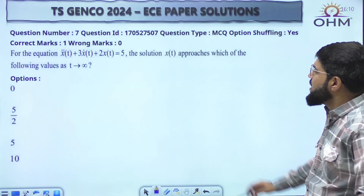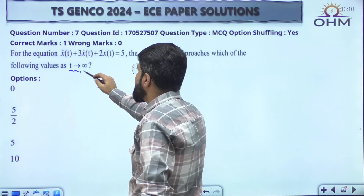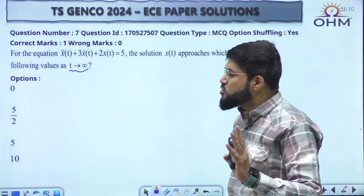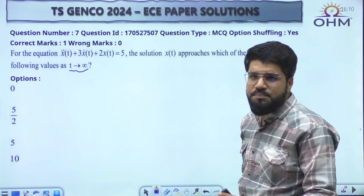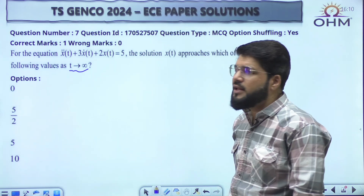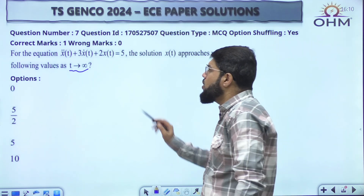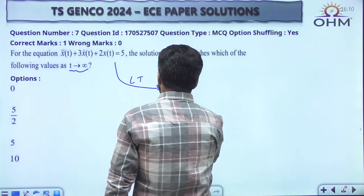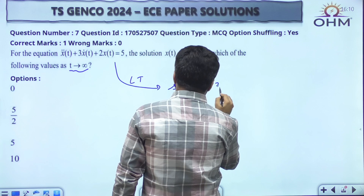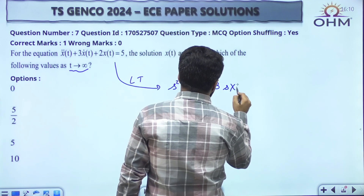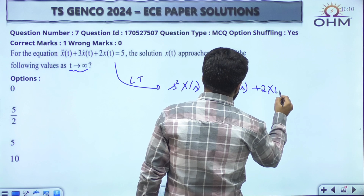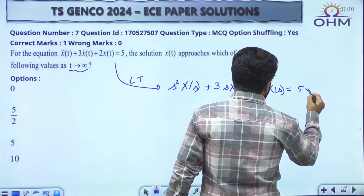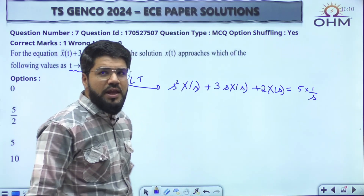Next question: for the equation x''(t) plus 3x'(t) plus 2x(t) equal to 5, the solution approaches which value for t tending to infinity? t tending to infinity means the final value theorem. This can be solved by calculating the complementary function and particular integral, or by the Laplace transform method. The Laplace transform gives s²X(s) plus 3sX(s) plus 2X(s) equal to 5, and the Laplace transform of 5 is 5/s.